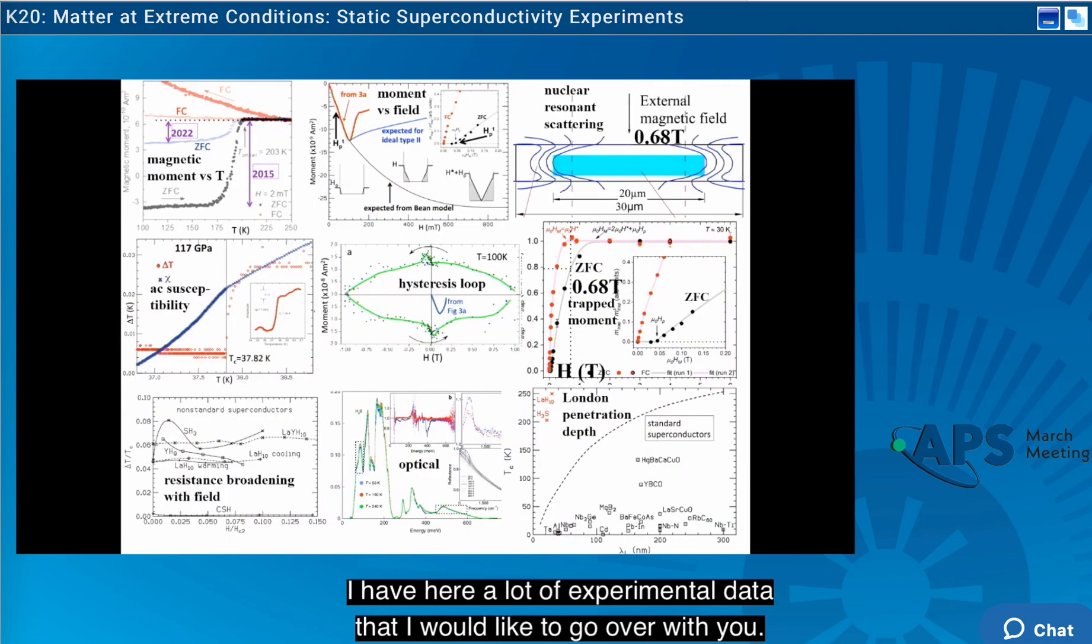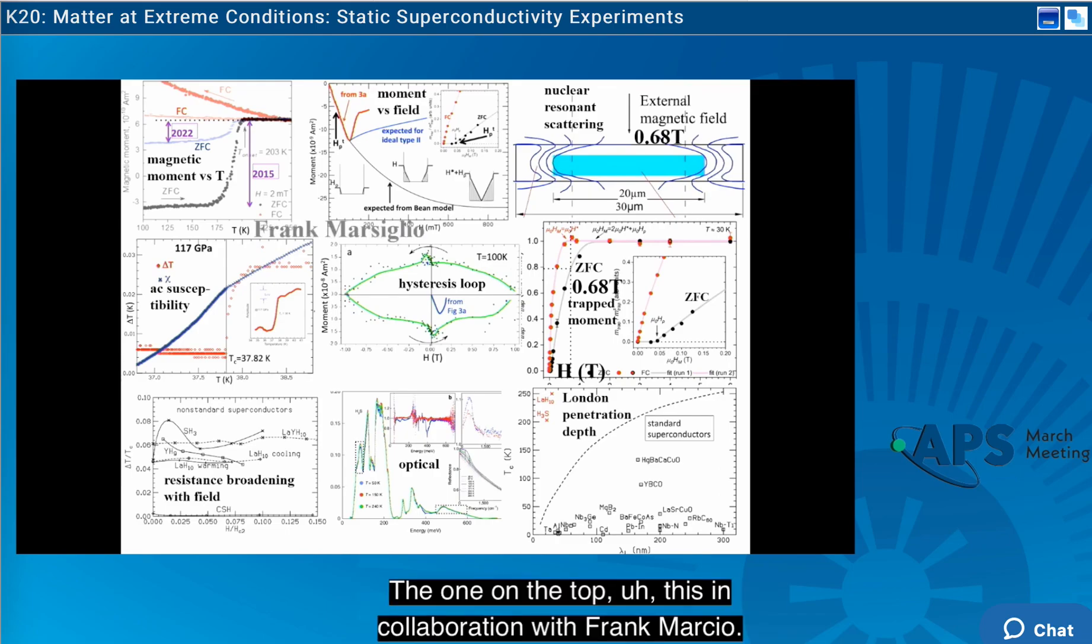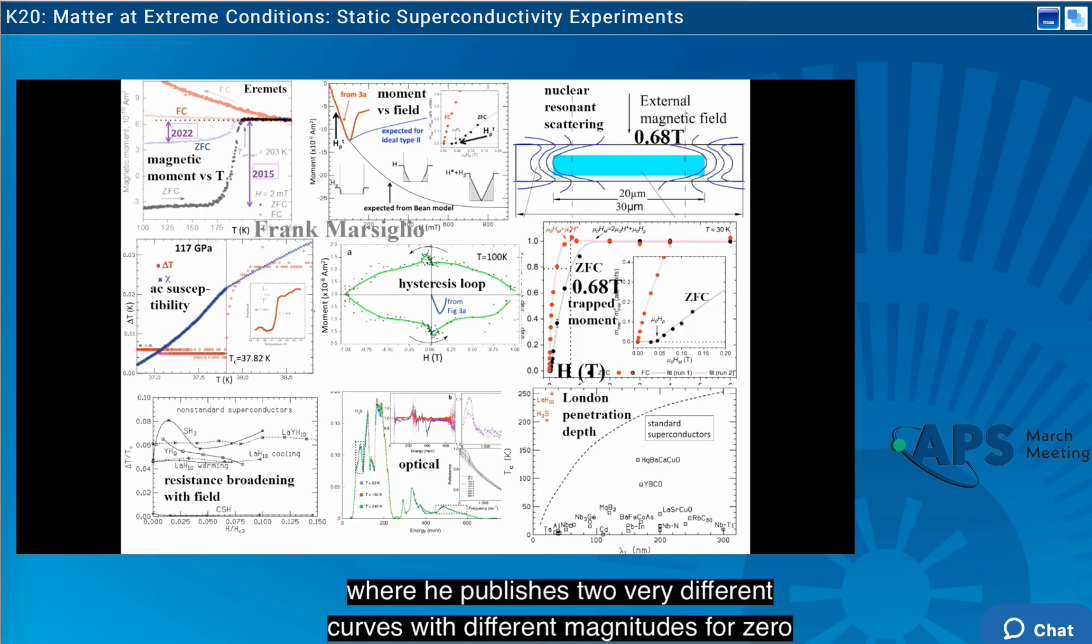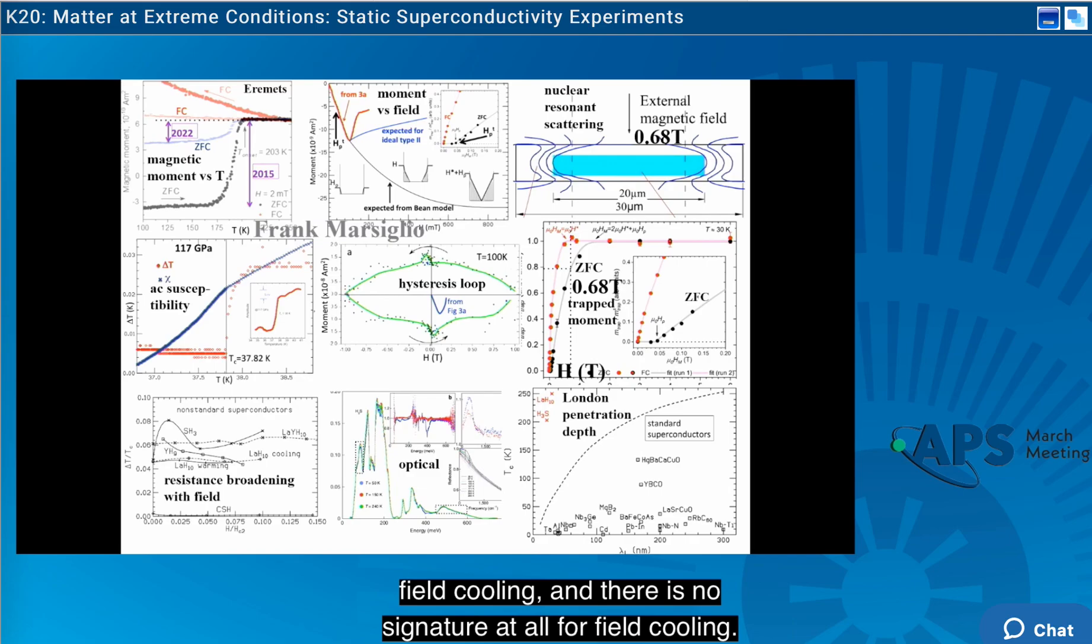I don't have a lot of time. I have here a lot of experimental data that I would like to go over with you. The one on the top, this in collaboration with Frank Marsiglio, the top one on the left is from Eremets' work on magnetization of sulfur hydride, where he publishes two very different curves with different magnitudes for zero field cooling. And there is no signature at all for field cooling. In more recent work,